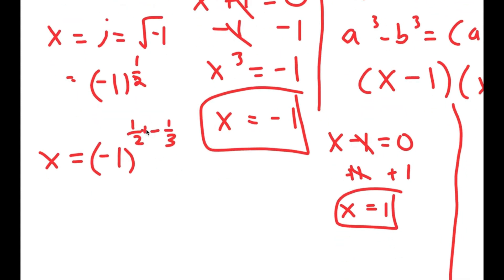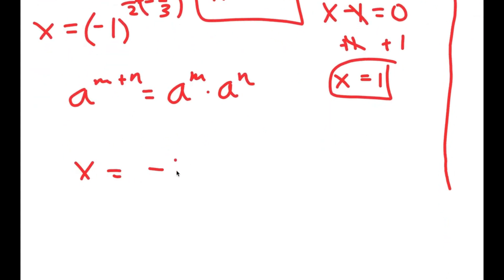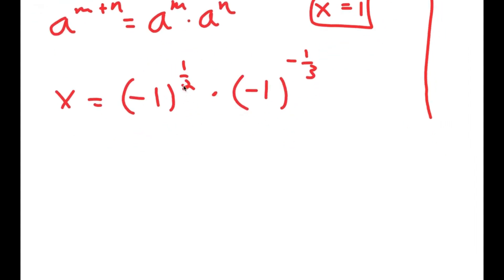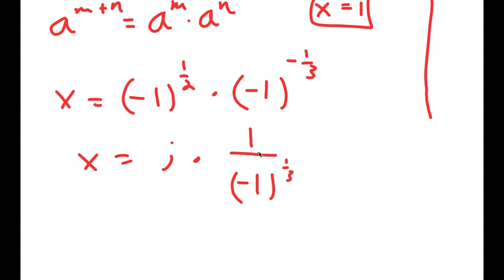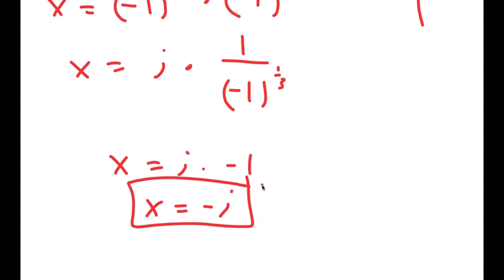We can rewrite 1 over 6 as 1 half plus negative 1 over 3. Using the property a to the power of m plus n equals a to the power of m times a to the power of n, this becomes negative 1 to the power of 1 half times negative 1 to the power of negative 1 over 3. Negative 1 to the 1 half is i, and negative 1 to the power of negative 1 over 3 equals 1 over negative 1 to the 1 over 3, which equals negative 1. So I get i times negative 1, which equals negative i — my final solution.